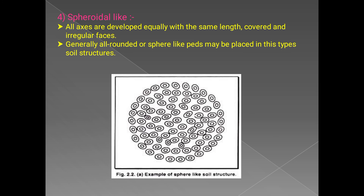The fourth type is the spheroidal structure. In this type, all axes are developed equally with the same length, and the faces are irregular and generally rounded or sphere-like. As seen in the figure, the particles are totally rounded and arranged together, making this structure easy to identify.